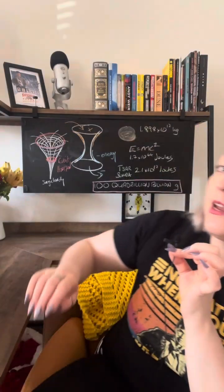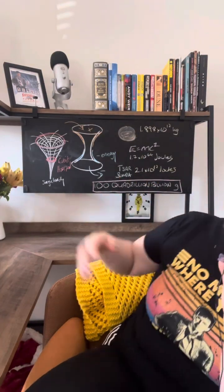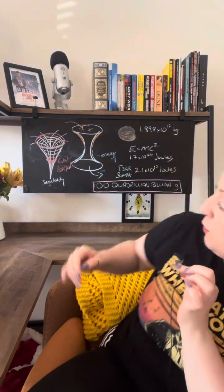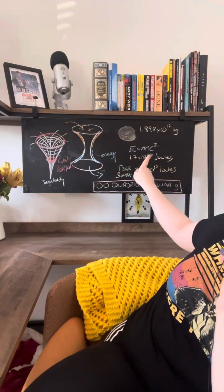Initial estimates for the energy required to power an Alcubierre drive are on the order of the mass-energy of Jupiter. Jupiter is 1.898 × 10^17 kilograms, and using Einstein's E = mc² equation, we can work out the energy value would be around 1.7 × 10^44 joules.